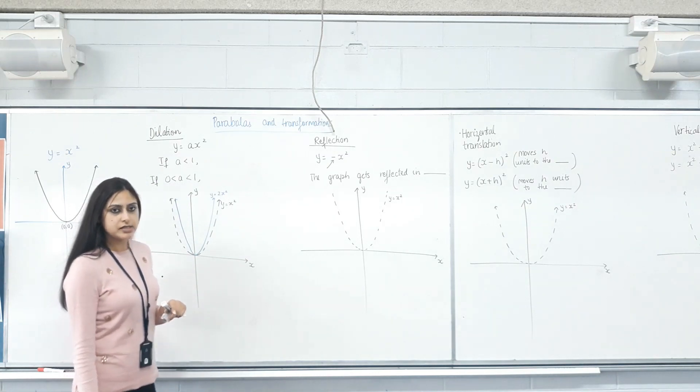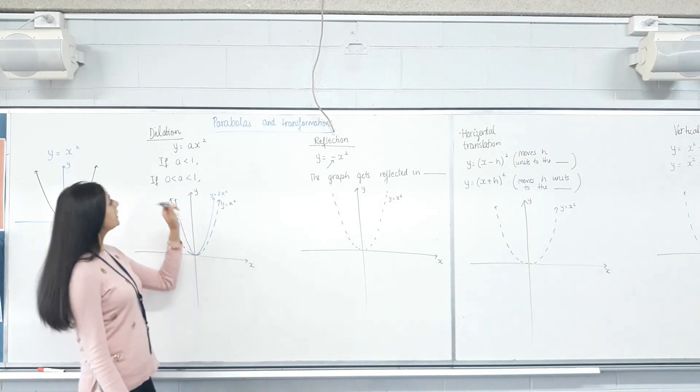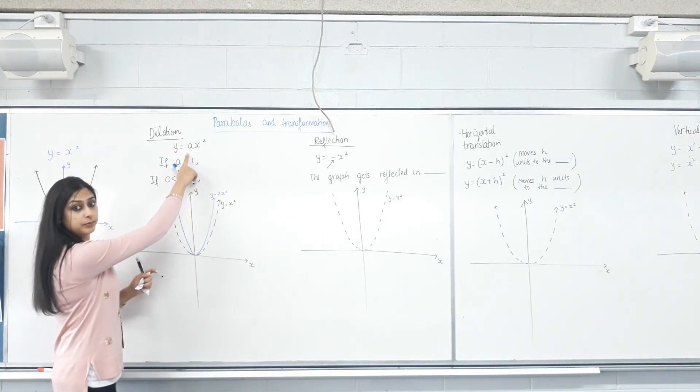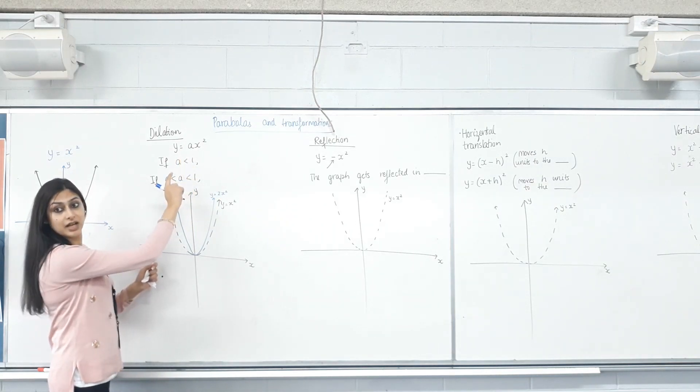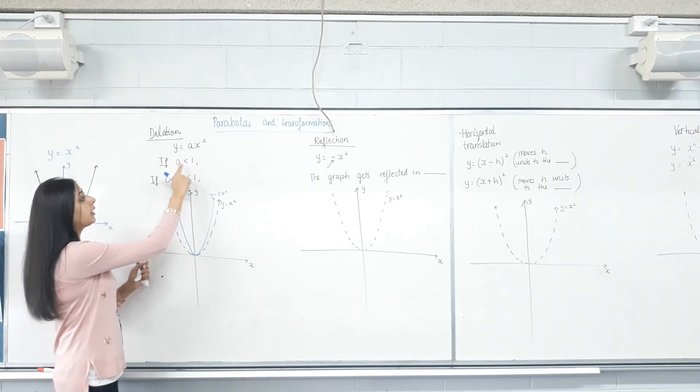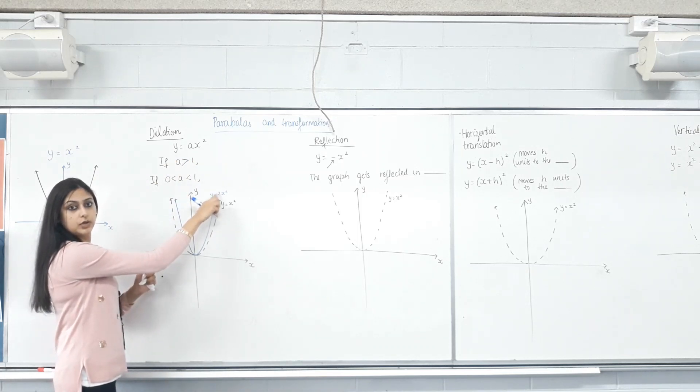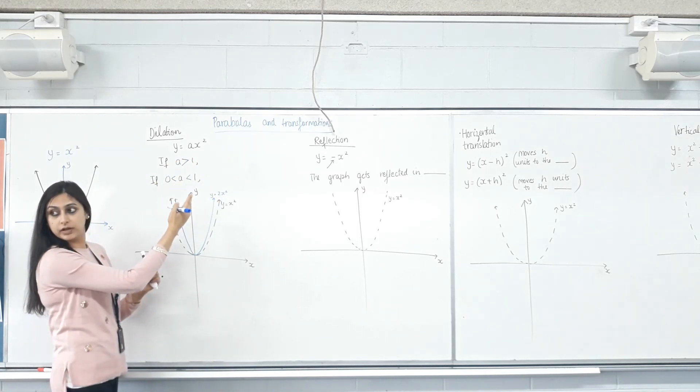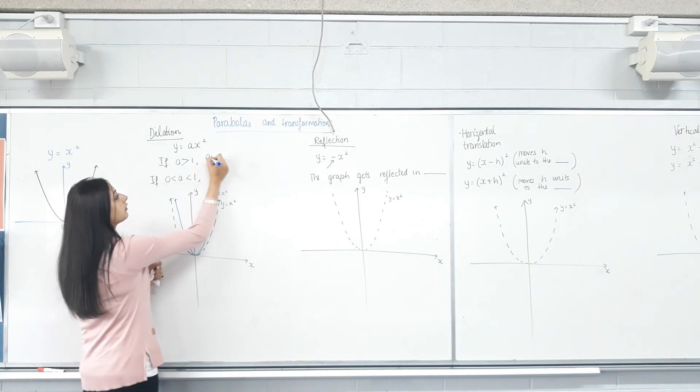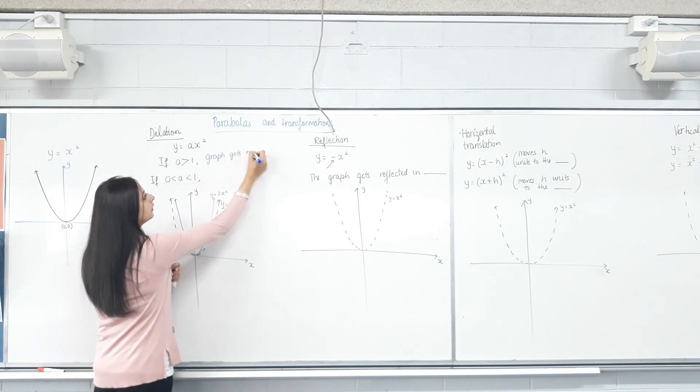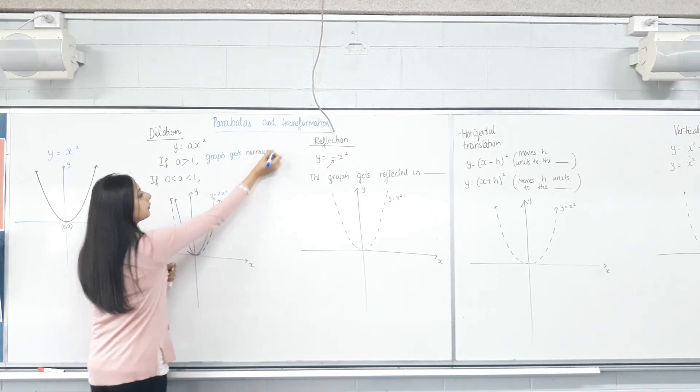Now, eyes on the board. CAS down. Is it safe to say that if we multiply x squared with a number, and if that number is greater than 1, so was 2 greater than 1? Then we had 3x squared. Was that greater than 1? What happens? The graph gets narrower. Is everyone happy with that?